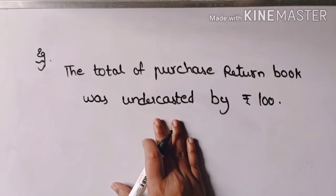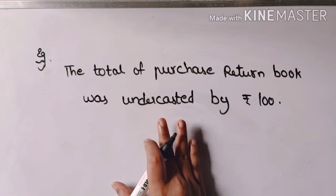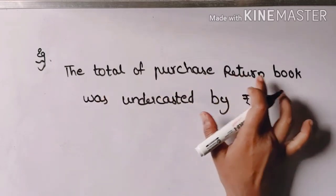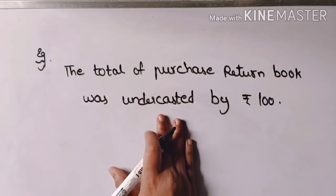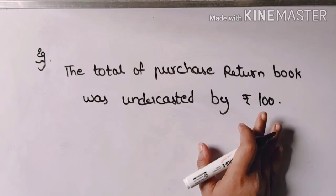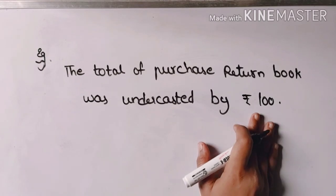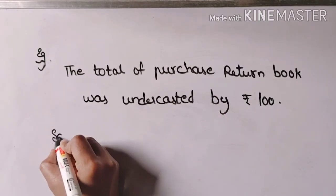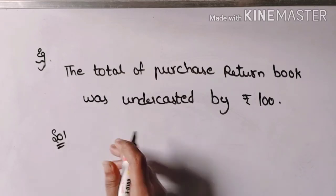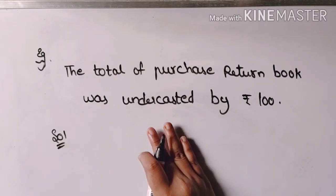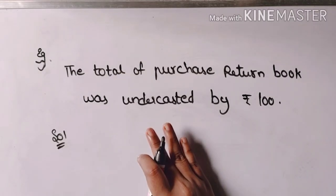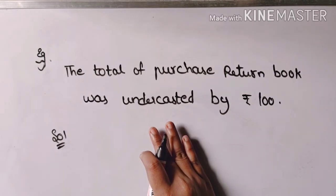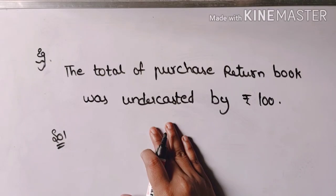Another error: the total of the Purchase Return Book was undercasted by rupees 100. Students, I want the answer to this question from you — please comment your answer in the comment section below, and I will check the answers as well.